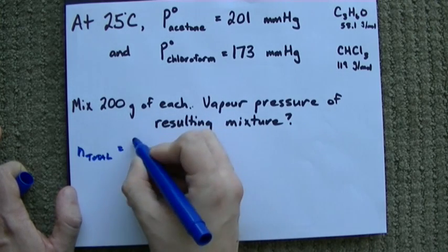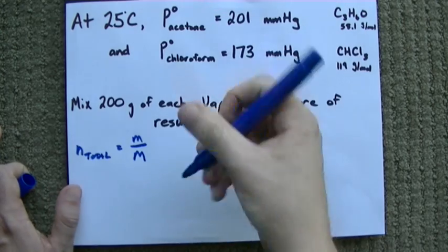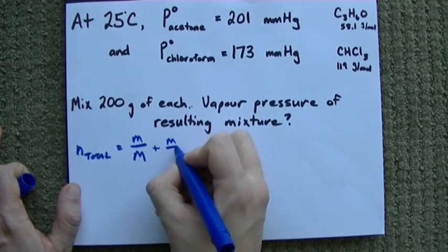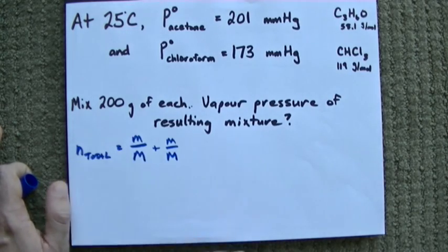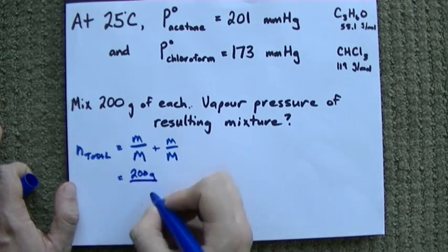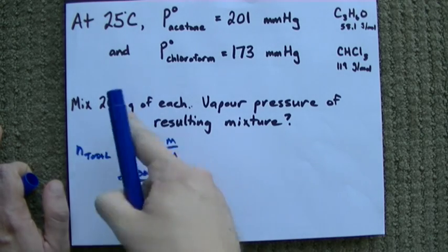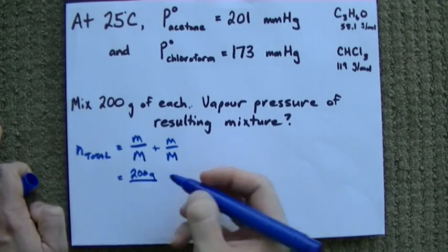We need the number of moles of acetone, and we need the number of moles of chloroform. The number of moles of each is just mass divided by molar mass, and we're told we have 200 grams of each. You may not have to do this calculation if you were just given moles. I was given grams, so we have to do it this way.